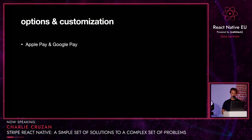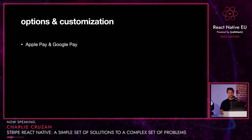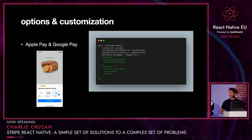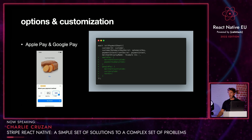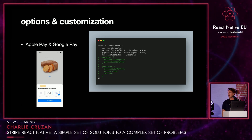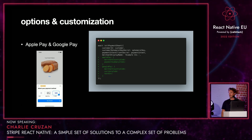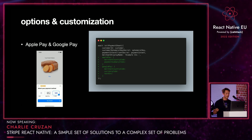First of all, integrating Apple Pay and Google Pay is super easy — barely any work. You just have to pass some JSON into the payment sheet function, and boom, on iOS you get the little Apple Pay section for your customers. And on Android, you'd see a similar Google Pay option.